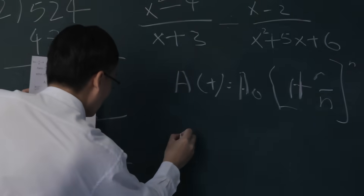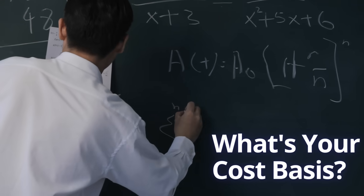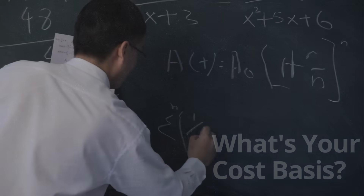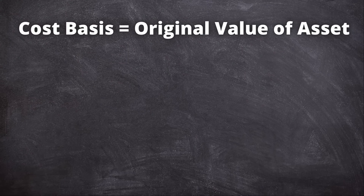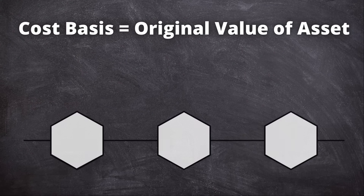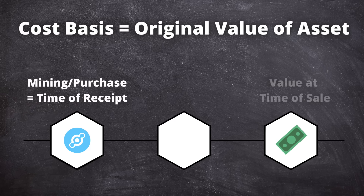How do we determine what to pay? First, we need to know the cost basis. For tax purposes, the cost basis is the original value of an asset. If you received your HNT through mining or purchase, your cost basis is simply the value at the time of receipt. Once we have the cost basis, we can use the value at the time of sale to determine if we have made a capital gain or loss on the sale.